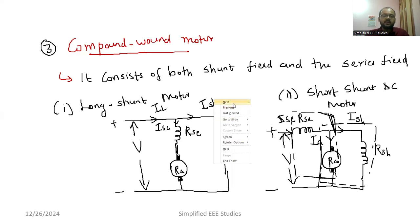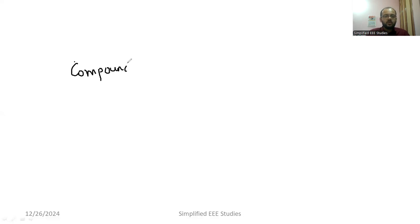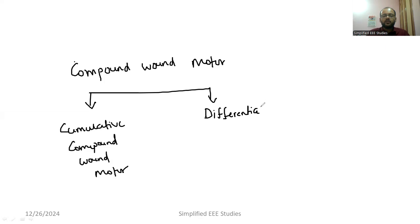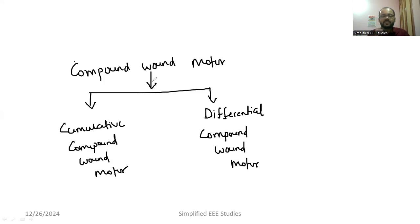There are additional classifications: cumulative compound motor and differential compound motor. The compound motor has the peculiarity of both the shunt motor and the series motor. Some applications like elevators require the combination of both shunt motor and series motor properties, so we use the compound motor in such cases.